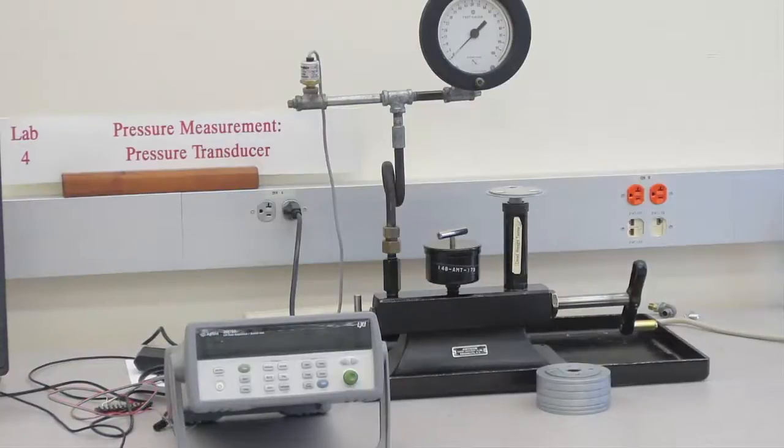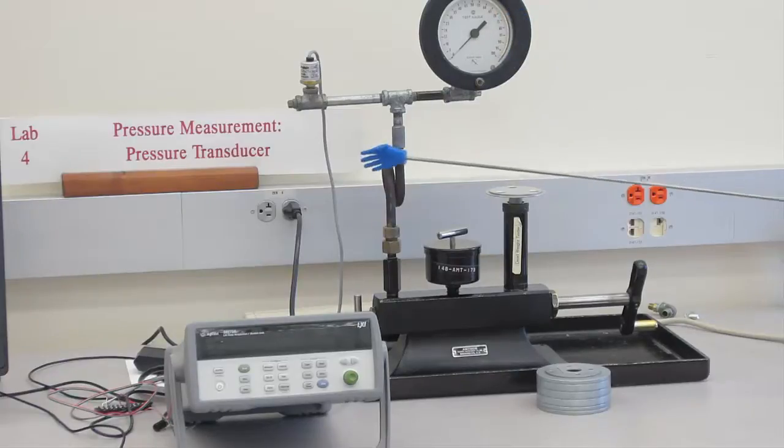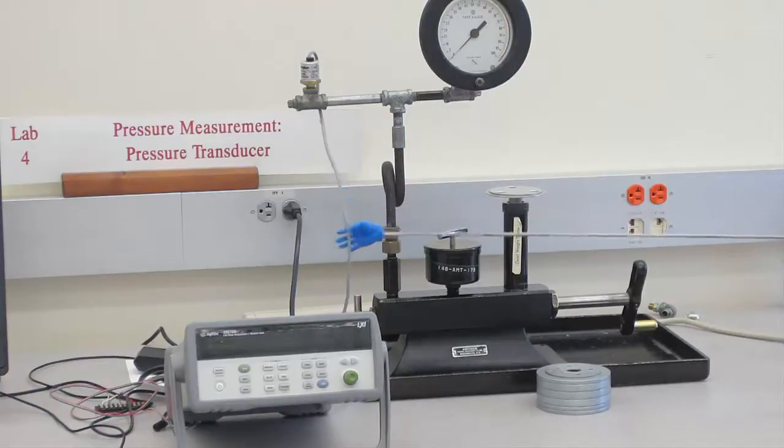First, let's take a look at the equipment we're going to be using. Here is the dead weight tester. As you can see, on top of the dead weight tester, coupled through a tube, is the Bordon tube gauge and a pressure transducer.